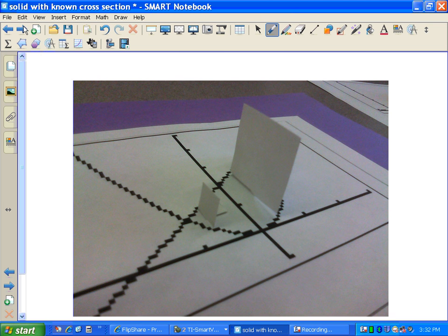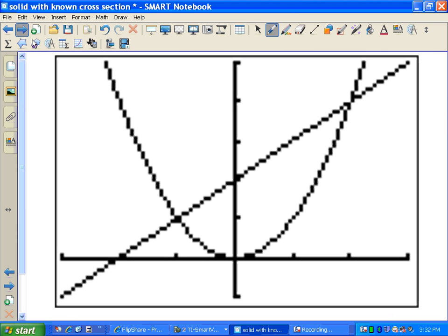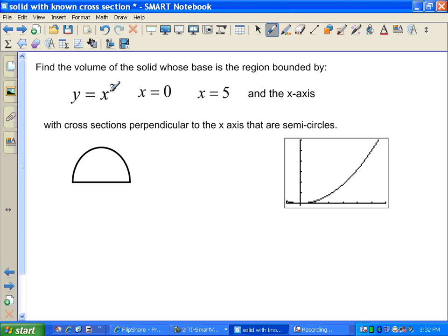As we move to another example, there's our picture. There's the bigger graph. Now, we're looking at a different curve. So, this time, volume of solid. The base is the region bounded by y equals x squared, which is this. x equals 0, which is right there. x equals 5, 1, 2, 3, 4, 5, which is right there. And, the x-axis. So, we're looking at just this region right here. This time, the cross sections perpendicular to the x-axis are semicircles.